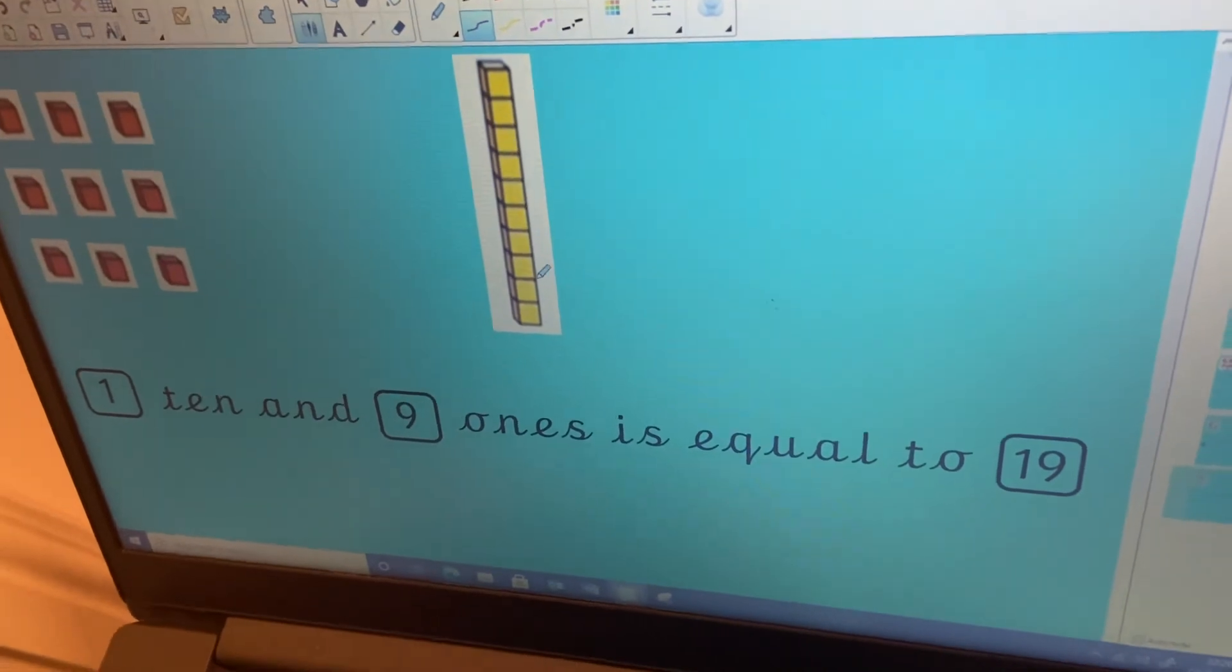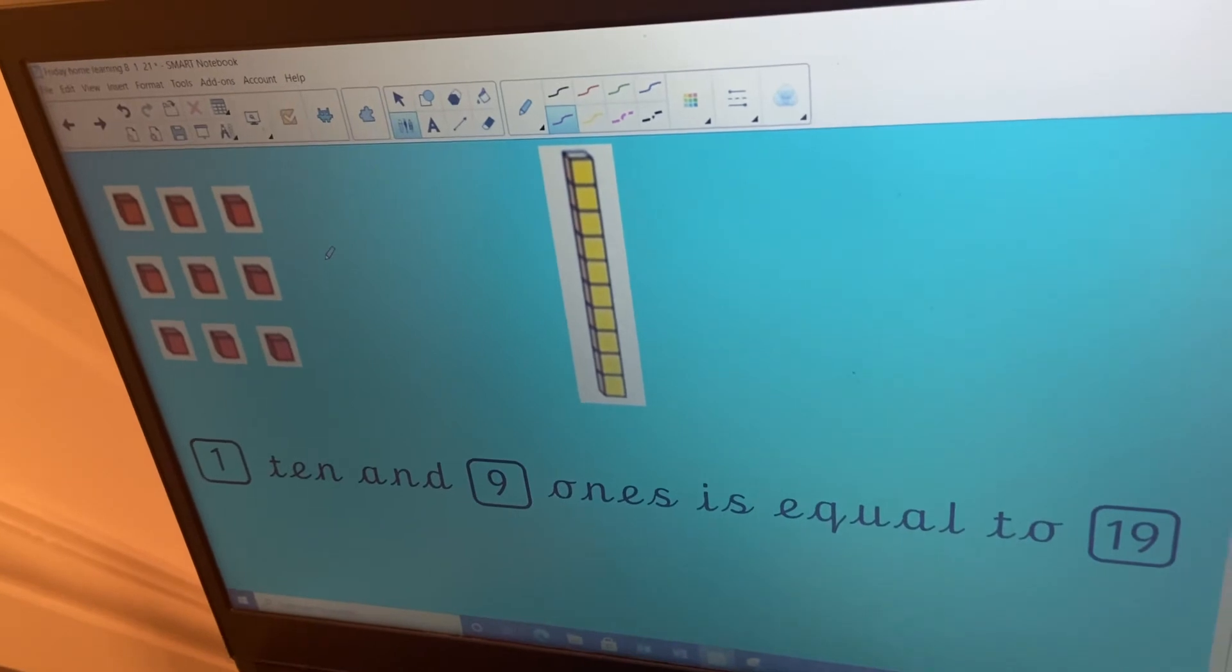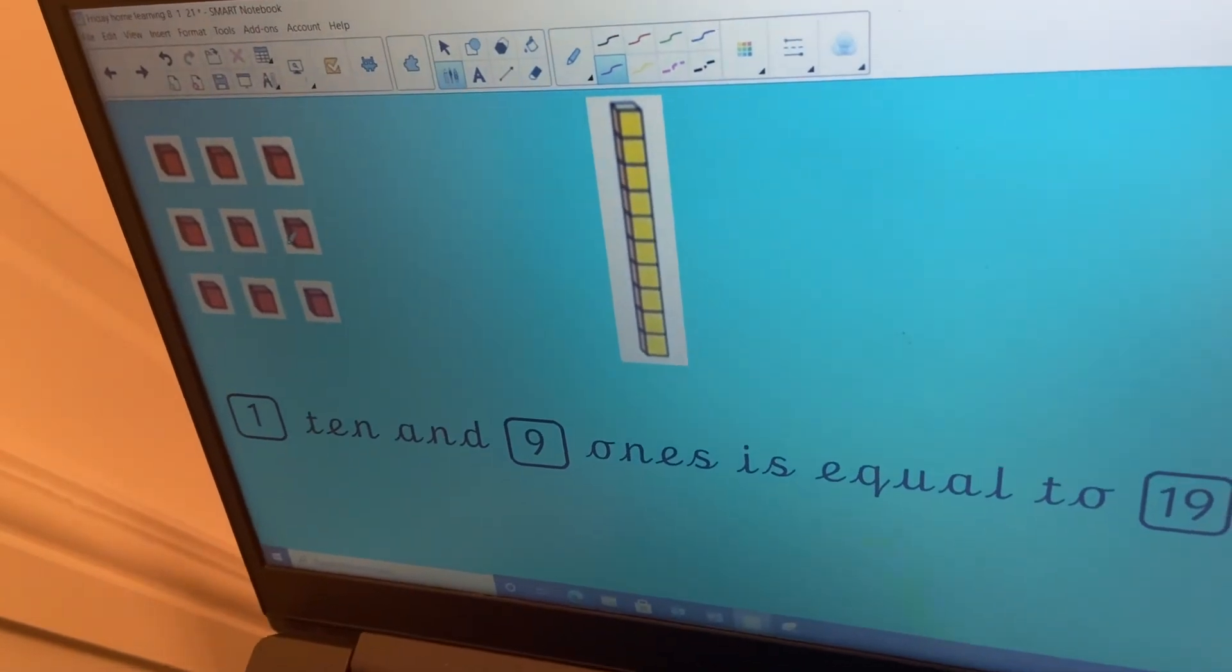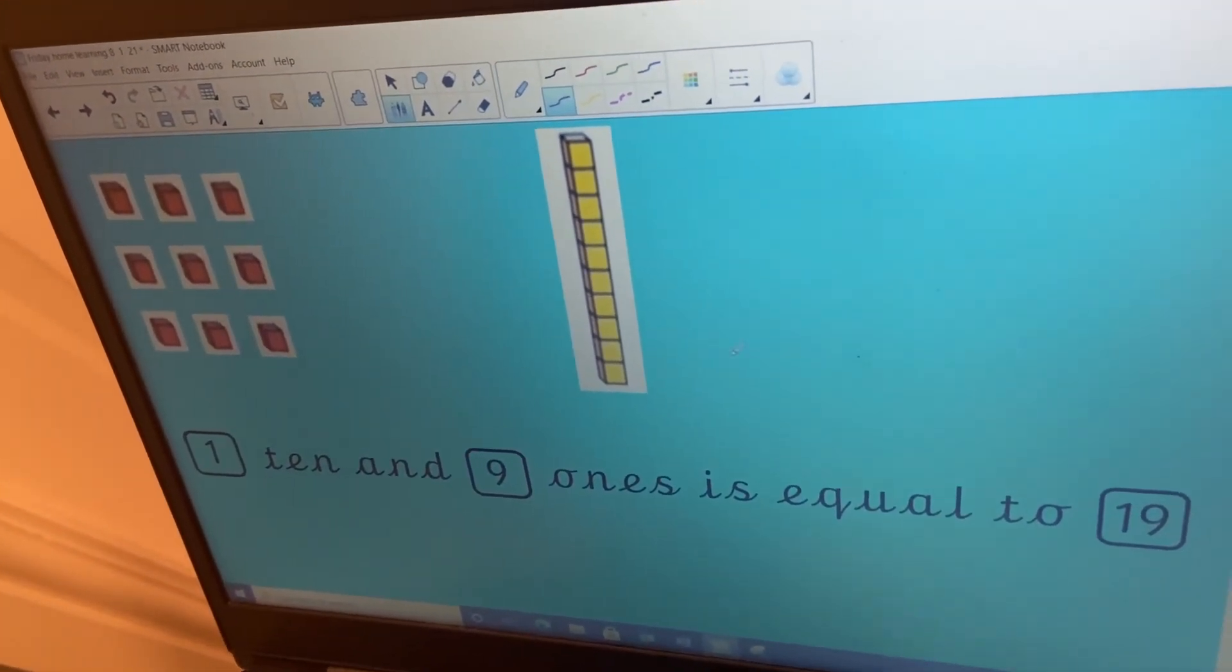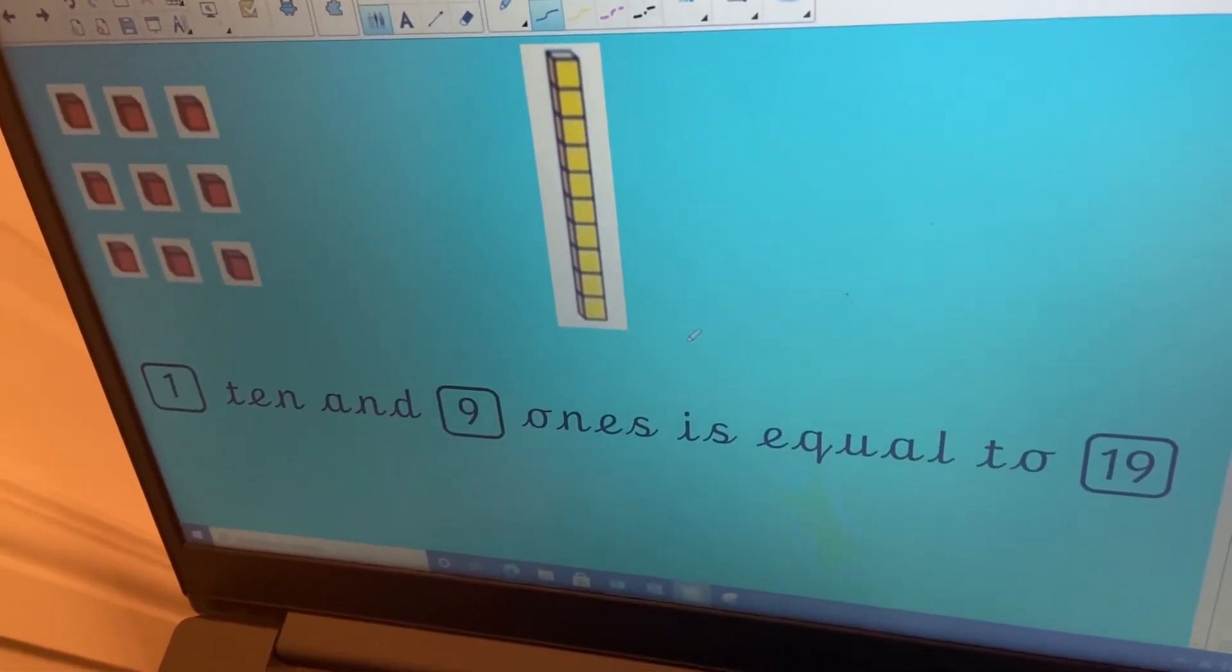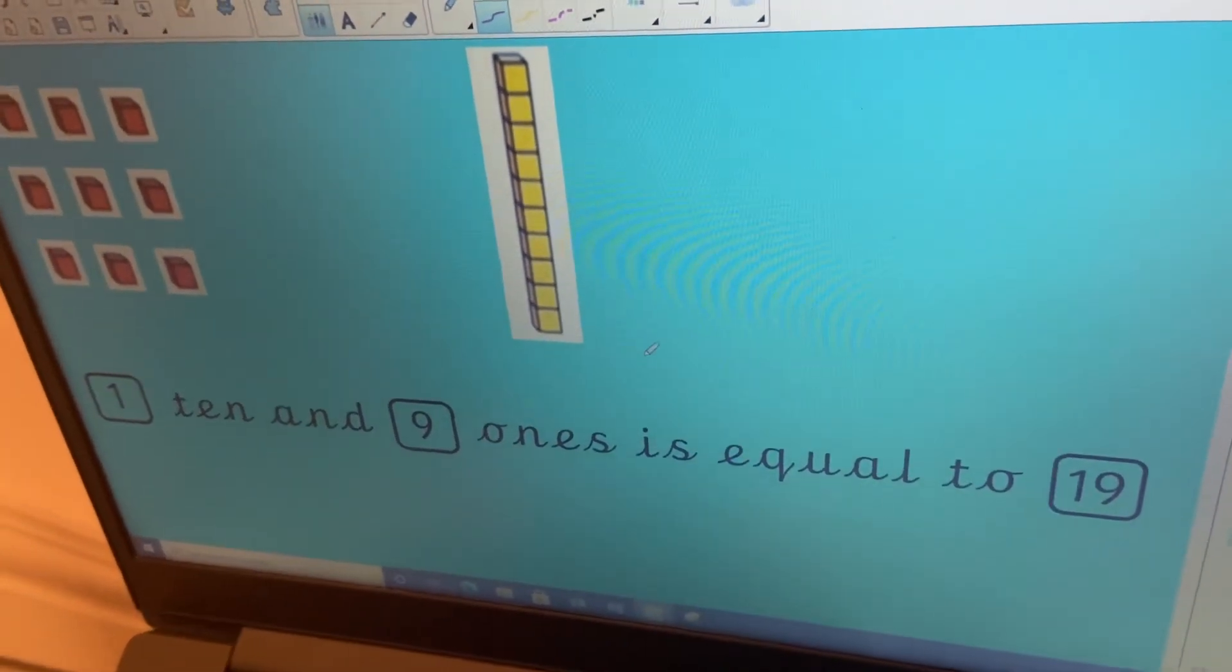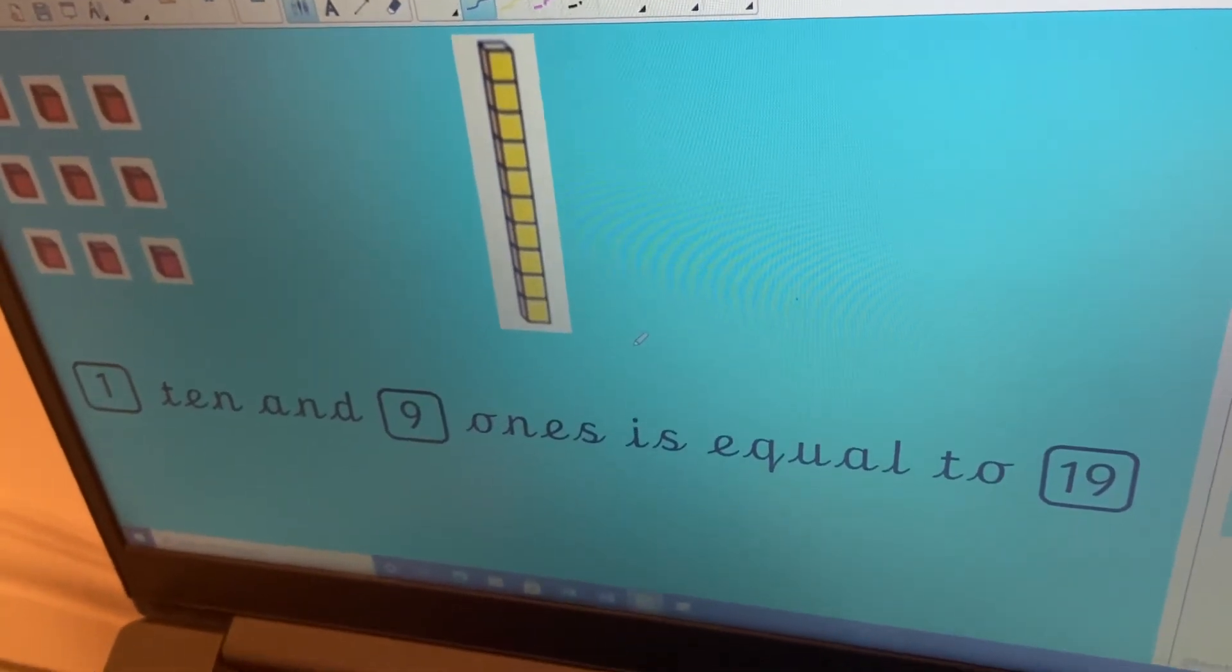And did you notice that it doesn't matter whether the ten is here and the ones are here or whether the ten is first and the ones are over here. It's still the same. We've still got one ten and nine ones, which equals 19. Now, I want you to have a go at doing your worksheet and then please keep sending us lots of pictures and videos of your work because it's amazing. And we're so excited to see your work and we just love getting all pictures of what you've done. See you soon. Bye bye.